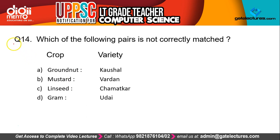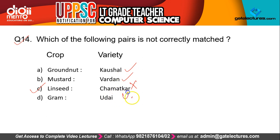Question 14 asks: which of the following pairs is not correctly matched? Here, crops and their varieties are given. The correct answer is C — linseed (alsi in Hindi) and the variety 'Chamatkaar'. No variety of linseed is named Chamatkaar. Groundnut's variety 'Koshal' is correct, mustard's variety 'Vardan' is correct, and gram's variety 'Udai' is also correct. So C is the wrong match.